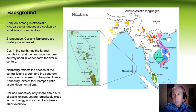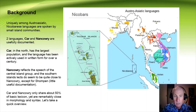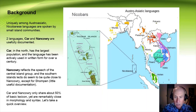The background is that, uniquely amongst Austro-Asiatic languages, Nicobarese languages are spoken by small island communities. Two languages, Ka and Nankaori, are usefully documented. Ka is in the north of the archipelago; it has the largest population and the language has been actively used in written form for over a century. Nankaori reflects the speech of the central island group, and it also appears that the southern island languages are quite close to Nankaori, except perhaps for Chowra, for which we have little useful documentation.